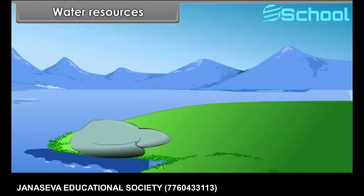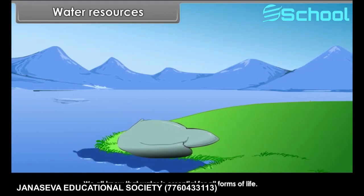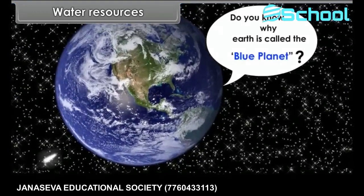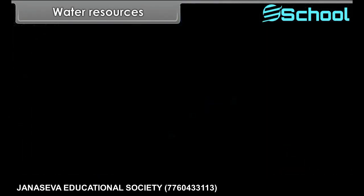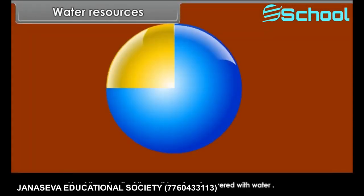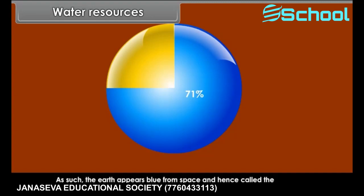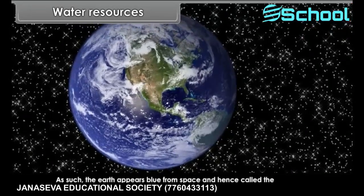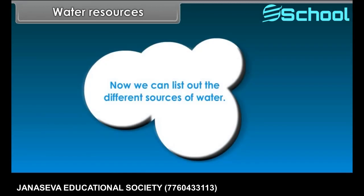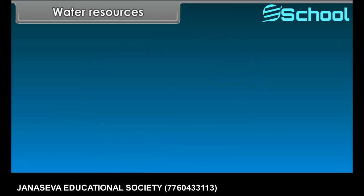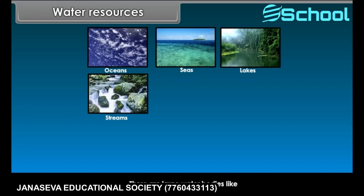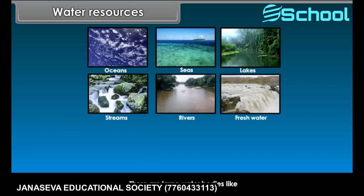Water resources. We all know that water is essential for all forms of life. About three-fourths — 71% — of the earth's surface is covered with water; as such, the earth appears blue from space and is hence called the blue planet. The different sources of water include large water bodies like oceans, seas, lakes, streams, rivers, freshwater, groundwater, etc.